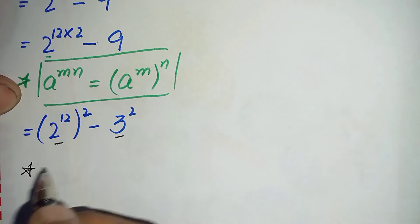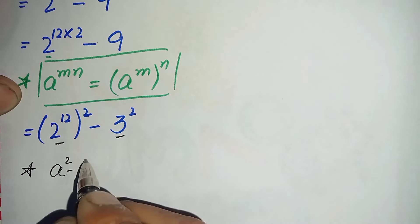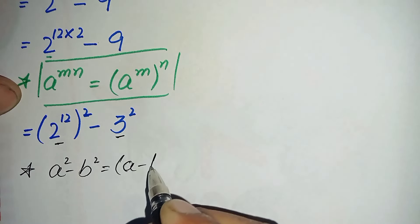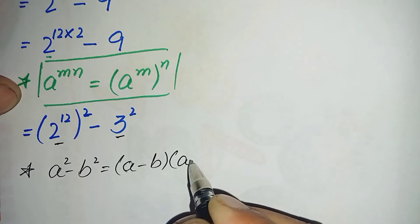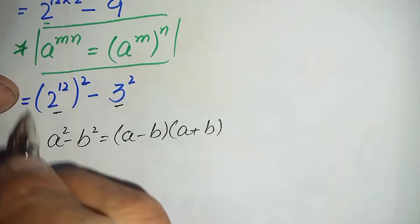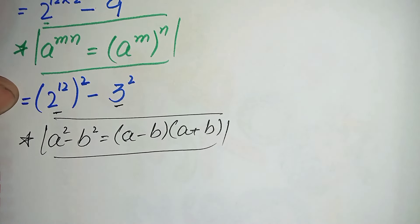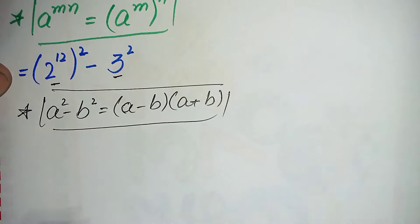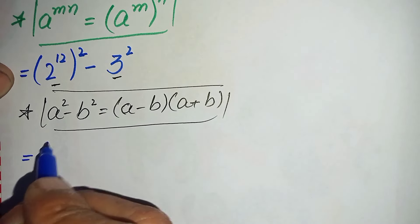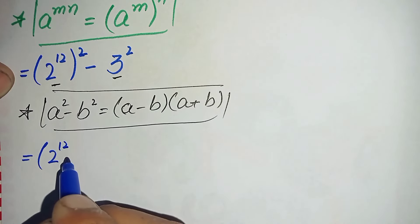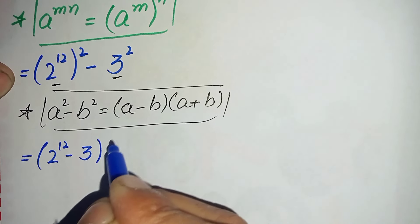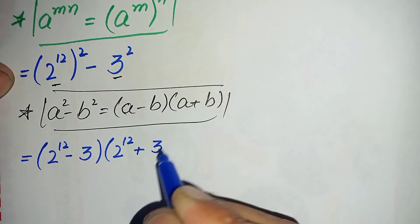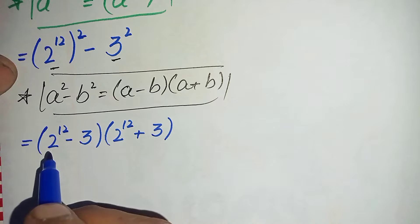Now in this equation we will use the famous algebraic identity a square minus b square, which is equal to a minus b times a plus b. Using this identity, where a is 2 raised to power 12 and b is 3, the equation will become 2 raised to power 12 minus 3, times 2 raised to power 12 plus 3.